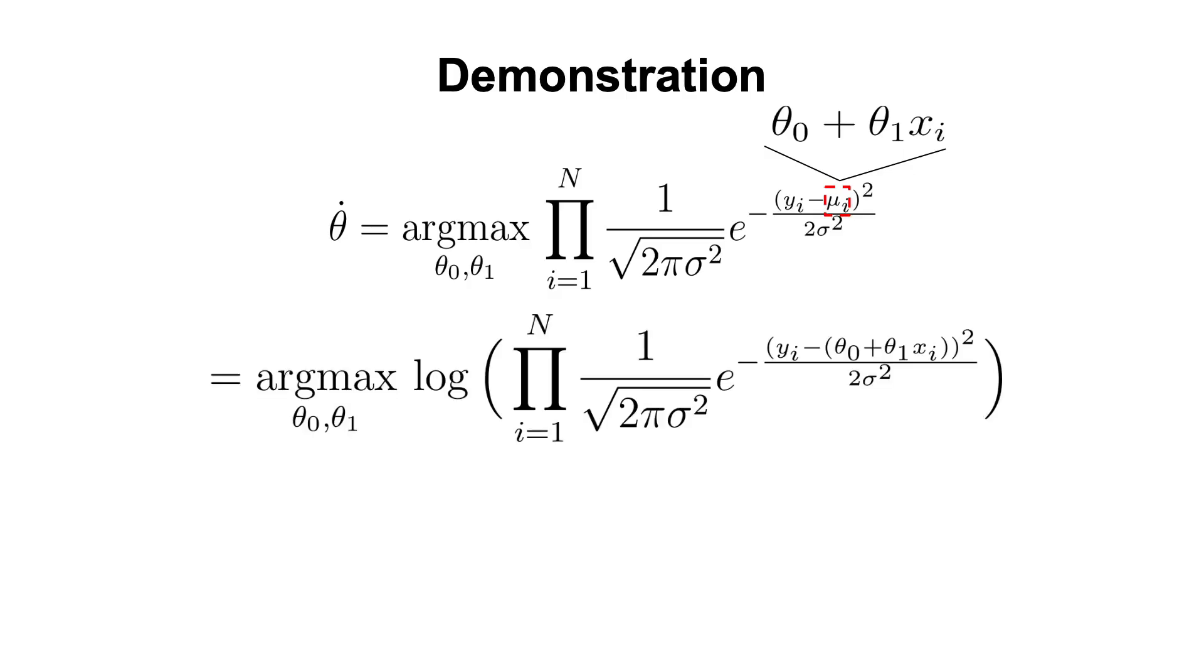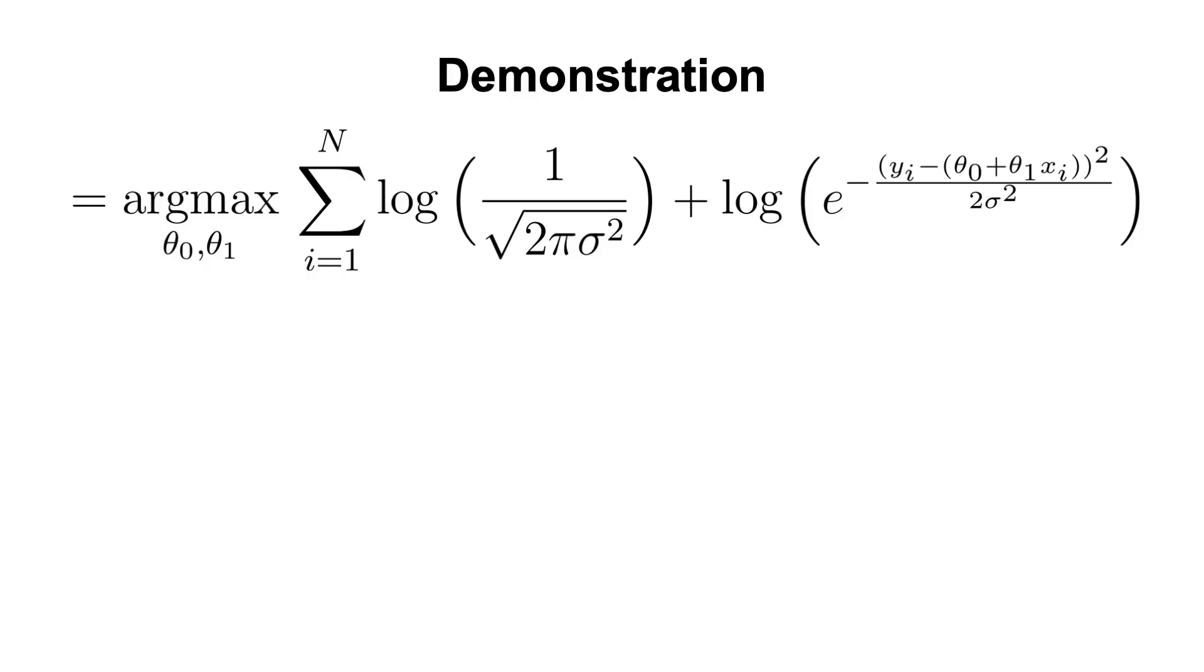Now, because the logarithm is a monotonically increasing function, finding the parameters that maximize this function would be equivalent to finding the parameters that maximize the logarithm of this function. And because the logarithm of a product is equal to the sum of logarithms, we get the following. We can further transform the product in the logarithm into a sum of logarithms.